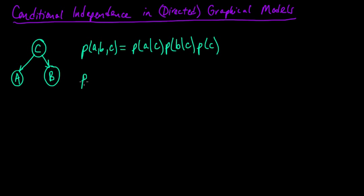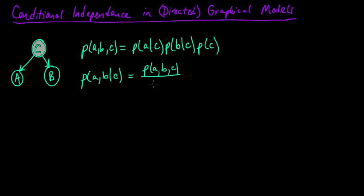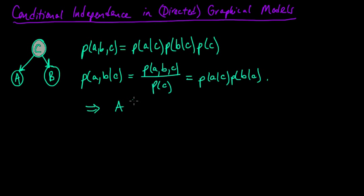Now let's think about what happens if we condition on C. What is the conditional distribution on A and B given C? Well, this is just the probability of all three of them divided by the probability of C. If we plug in the formula above, the probability of C cancels, and we get the probability of A given C times the probability of B given C. Therefore, A and B are conditionally independent given C. That's what this notation means, and that's what this implies.